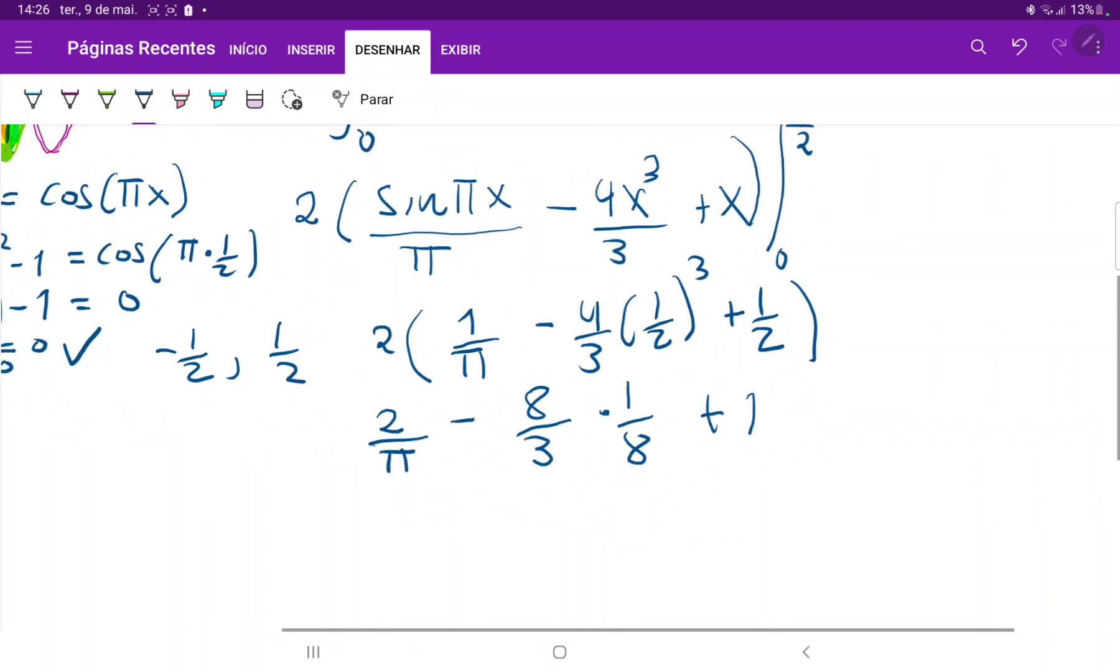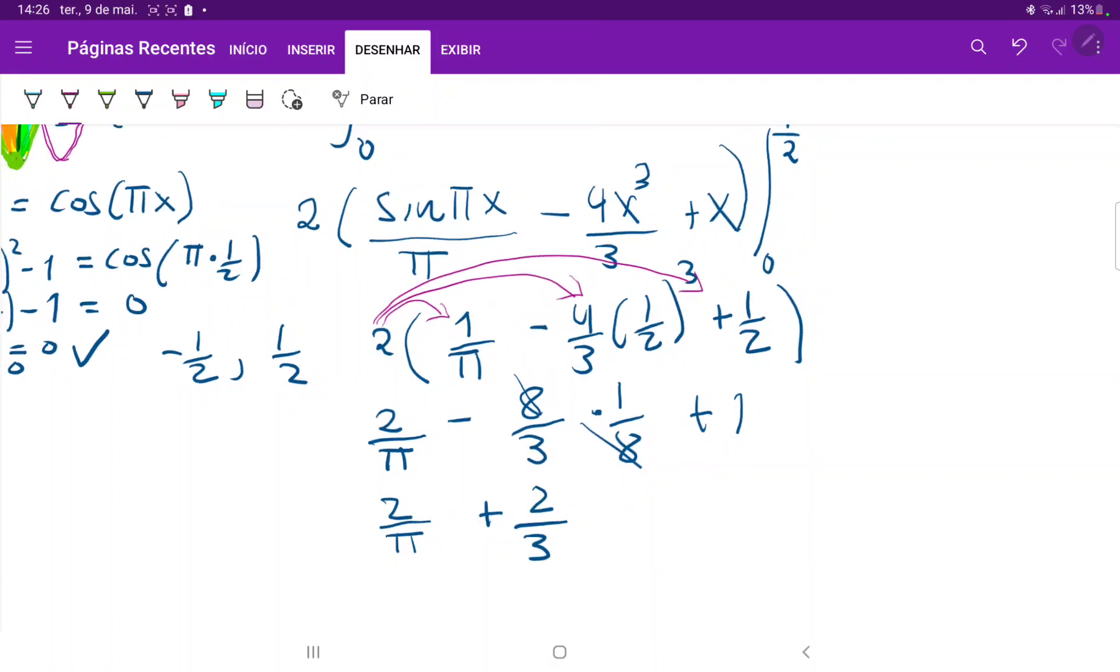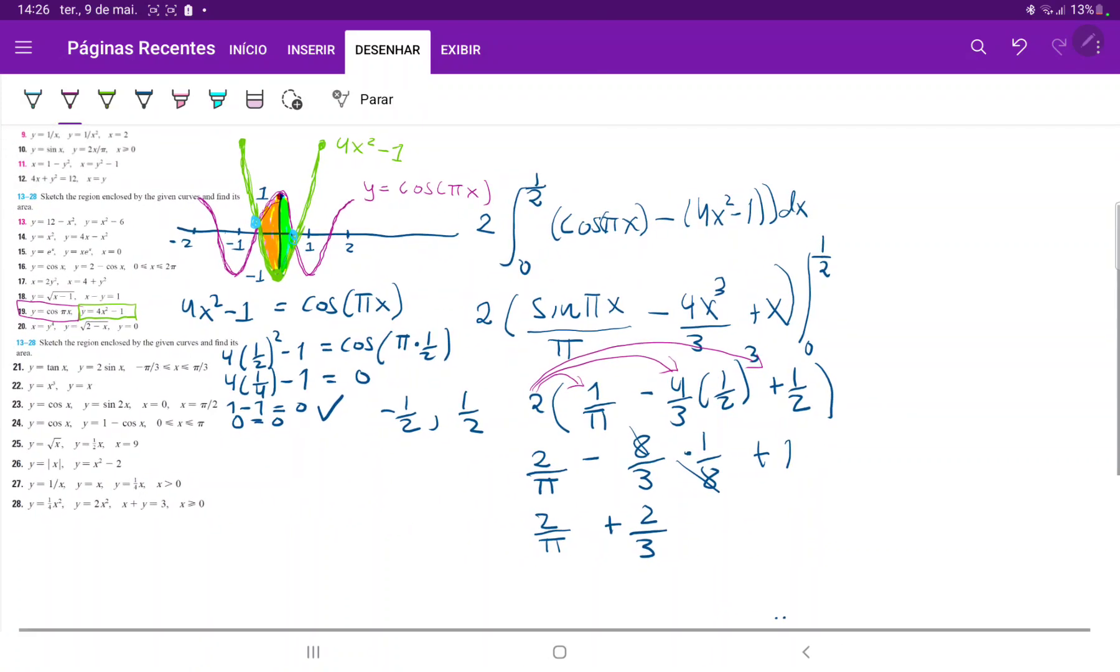Let's clean it up. This is 2 over π. 8 over 3 times 1 over 8, these cancel out, so that is just minus 1 third plus 1, which is plus 2 thirds. To make this super clear, I've multiplied this out.